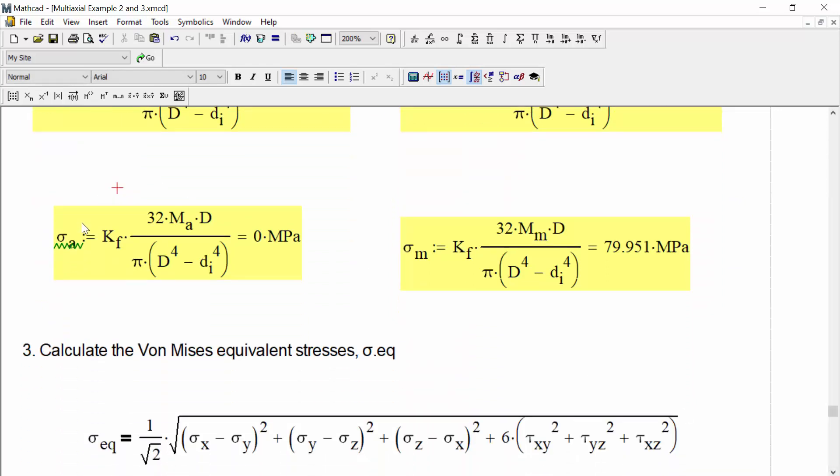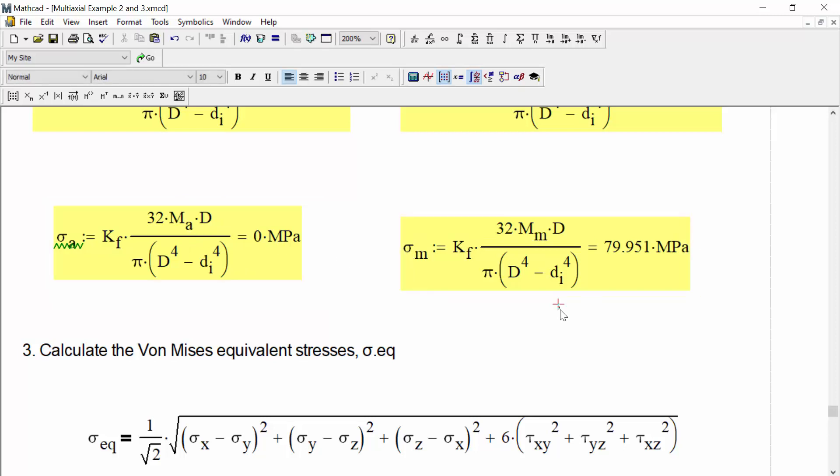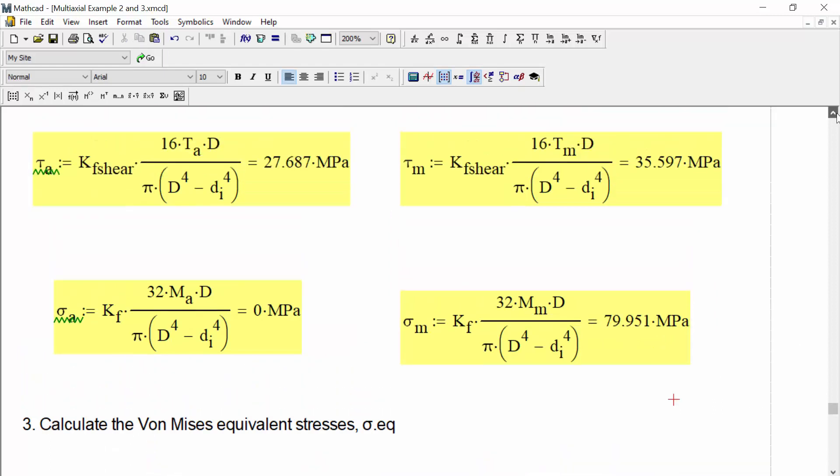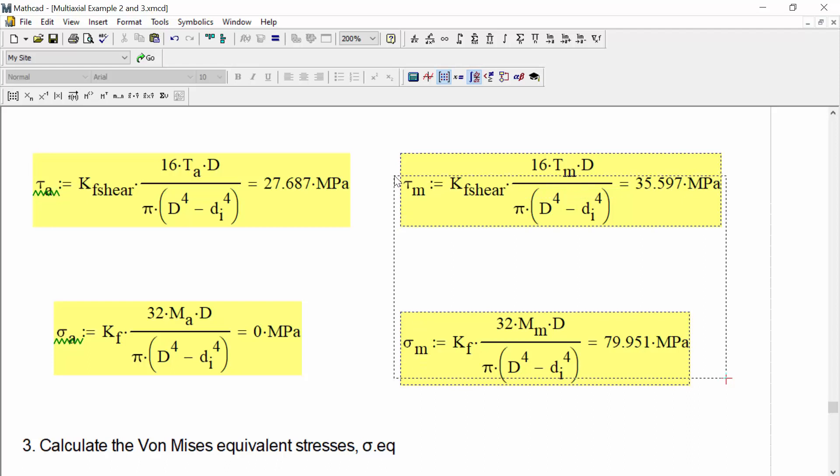Now let's do the calculation for the normal stresses. So we want to get the normal stress amplitude. We'll multiply the fatigue stress concentration factor Kf times the normal stress equation, and inside of that we're going to use the amplitude of our moment, which we know is 0. So our normal stress amplitude is 0. And then again, similarly for the mean stress, we'll use the mean moment, and we find that that mean stress is equal to about 80 megapascals. Now we have the normal and shear stress amplitudes and the normal and shear mean stresses.